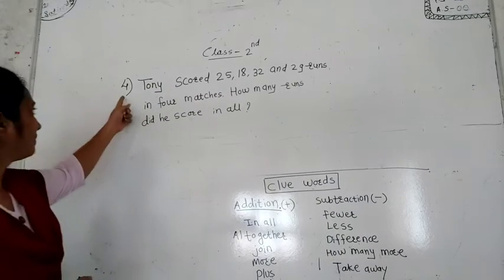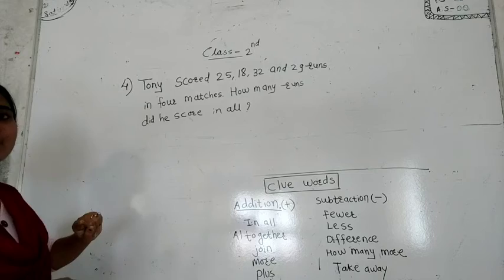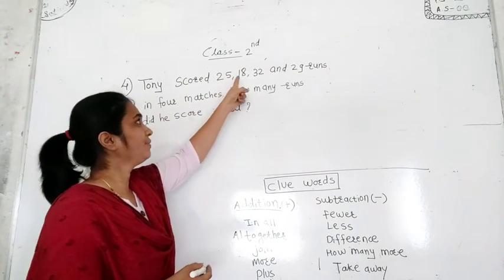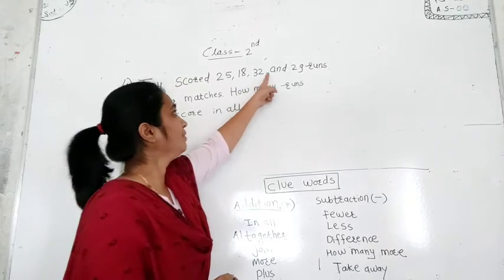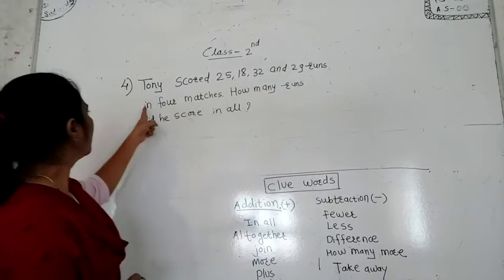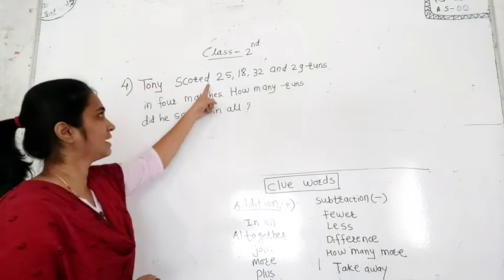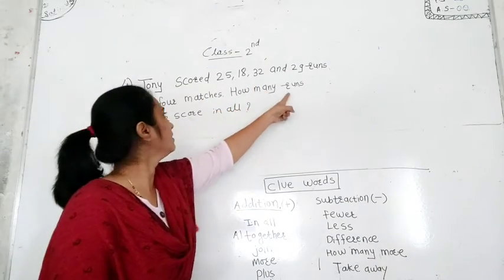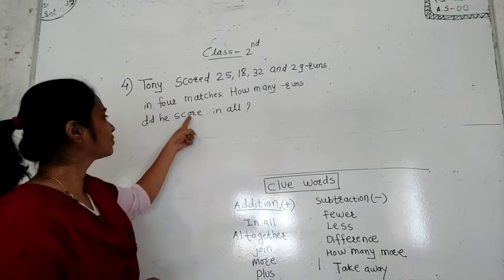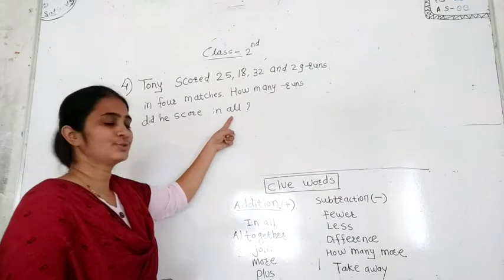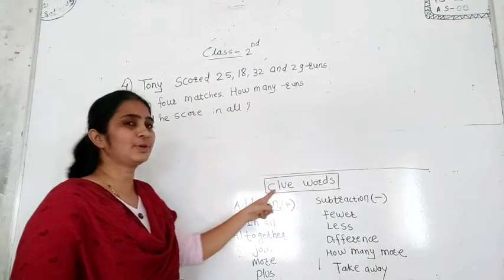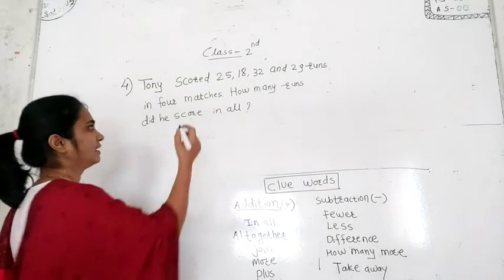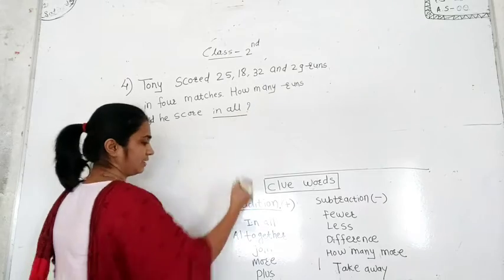Now let's take problem number 4. First we start the reading. Tommy scored 25, 18, 32, and 29 runs in 4 matches. How many runs did he score in all? First go to the clue words and see which words are in the problem. The clue word here is 'in all'.